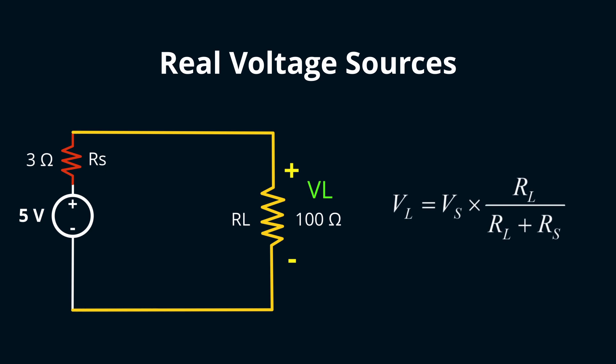For an in-depth exploration of this, our voltage divider video has you covered. With our numbers, the resulting voltage? Approximately 4.85 volts. A slight dip, but not catastrophic.